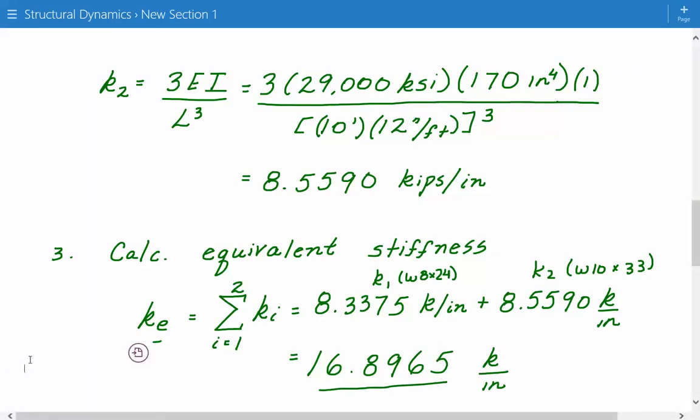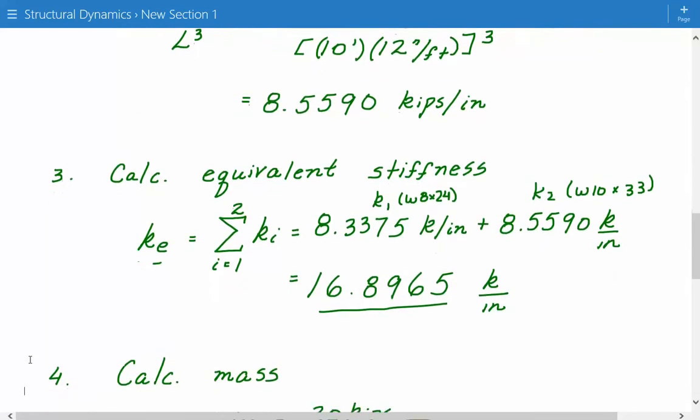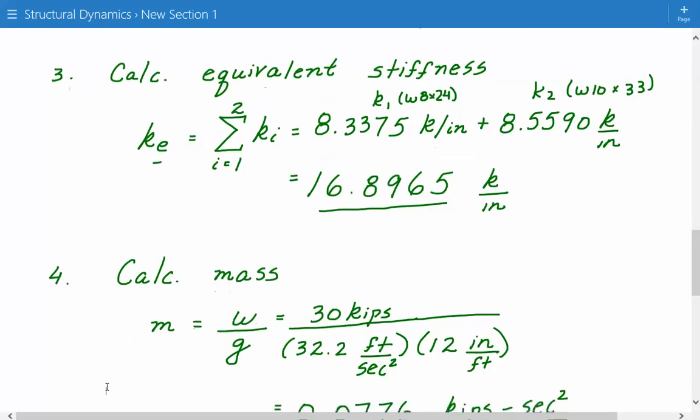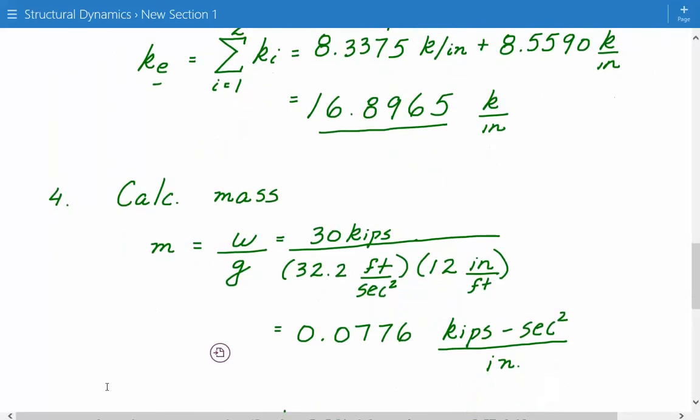Once we have the equivalent stiffness, we need to calculate the mass. And the mass is, we're talking about the weight that the girder is supporting. So the girder is supporting a weight of 30 kips, which is uniformly distributed. So to get mass, we just take that weight and divide it by the gravitational acceleration, which is 32.2 feet per second squared. And then we multiply it by 12 to get it into inches. So the mass is 0.0776 kips second squared over inch.